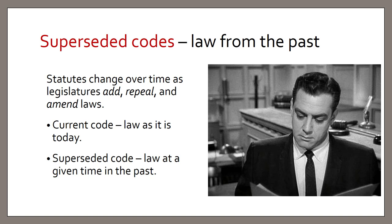Sometimes you actually need to find out what the law said in the past as opposed to the current version of the law. This is where superseded codes come in handy. We save the current version of the code each year and set it aside — done digitally as well — so that we can go back and look at what the code said in the past. For example, if you have a client that committed a crime two years ago, you'll want to know how that crime was defined then. In one real case, someone wanted to buy a firearm but had a criminal record from 1978 for vagrancy. If that vagrancy charge was a felony they could not buy a firearm, but if it was a misdemeanor they could — so we had to go back to the 1978 criminal code to determine what the charge of vagrancy carried.